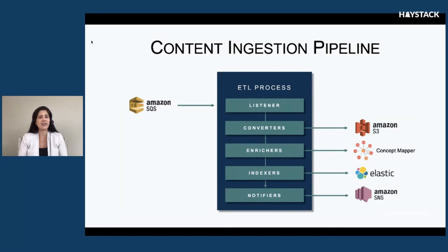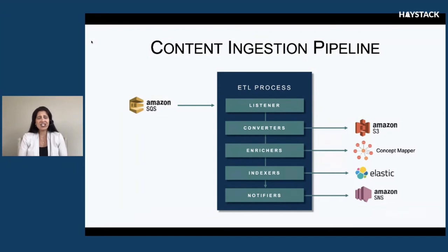The pipeline essentially listens for these events and then takes action. The first thing it does is go out to S3 and fetch that particular piece of content. It then transforms it into internal POJOs. We take chunks of that content and pass it off to a concept mapper in order to semantically understand its meaning. We do quite a bit of different types of enrichment or decorating against this content, but the most compelling impact is really the result of our semantic enrichment. It is then saved into our Elasticsearch index, and we notify the other services of the outcome.